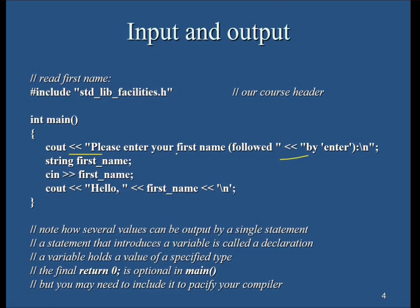In this case there are two string literals which will be shown. The first statement that introduces a variable is called a declaration. Here, 'first name' is the variable name. A variable holds a value of a specified type — the type here is string. So 'first name' will only take a string value. The 'return 0' at the end of main is optional but may be needed to satisfy your compiler.